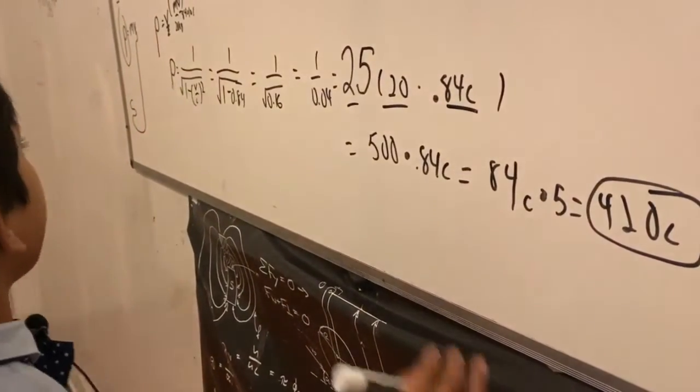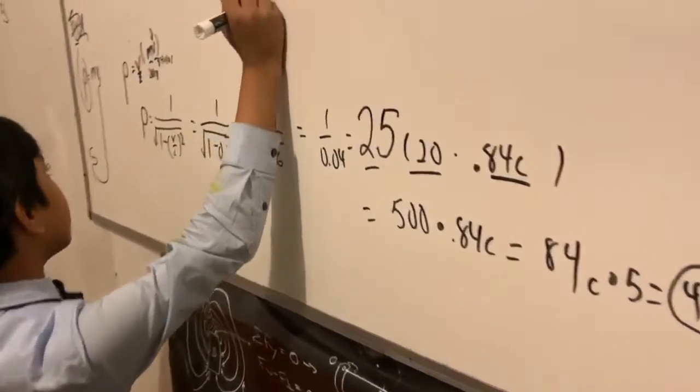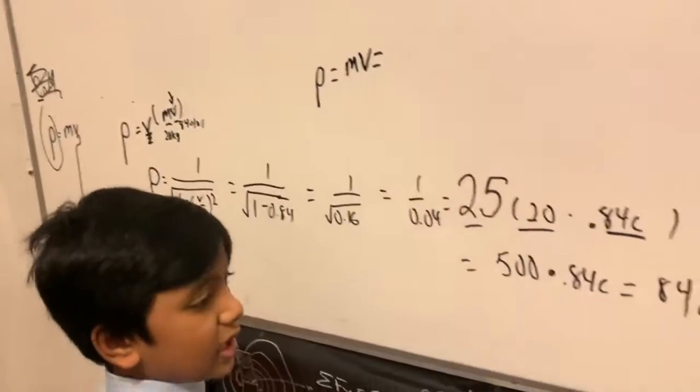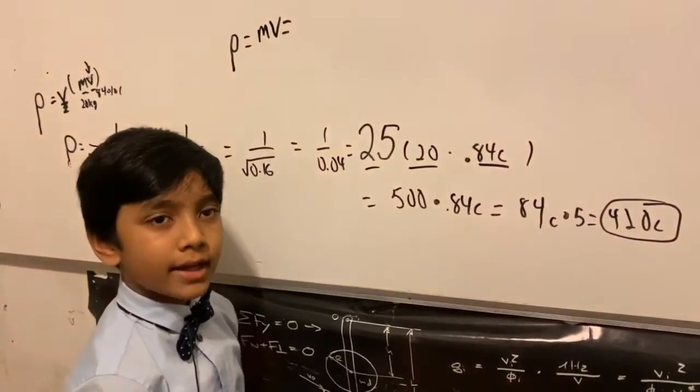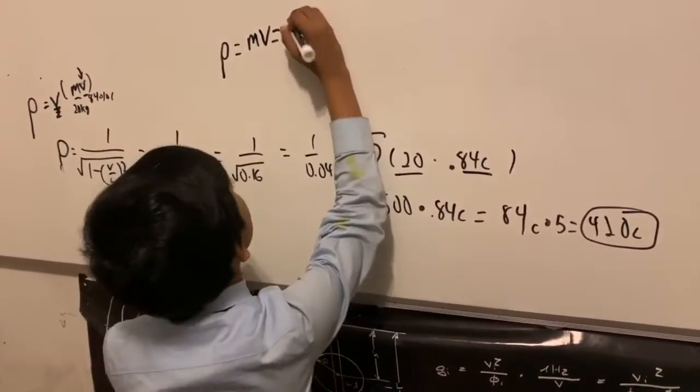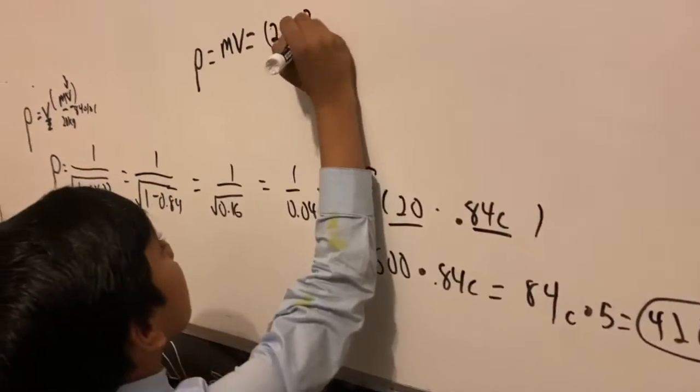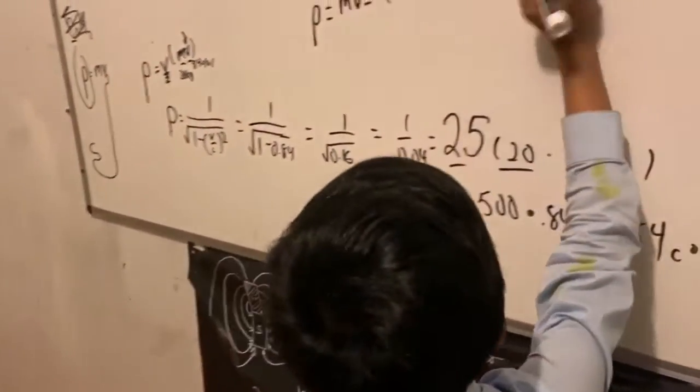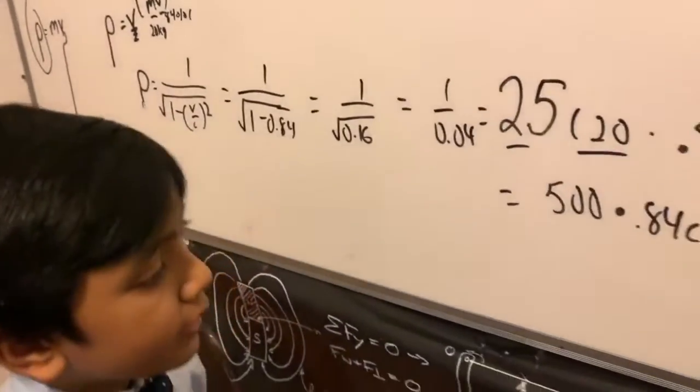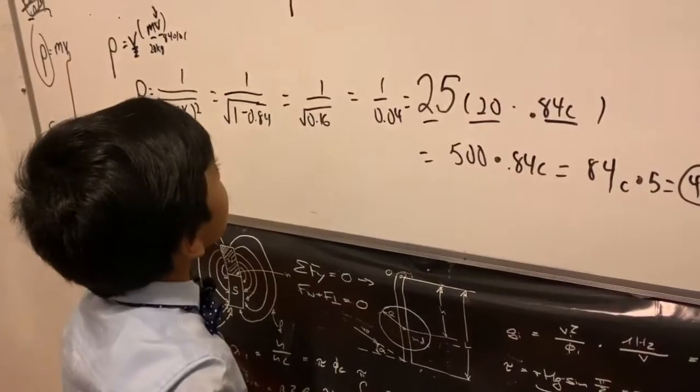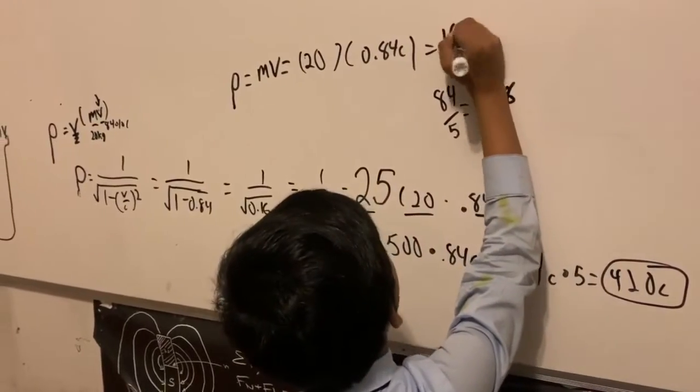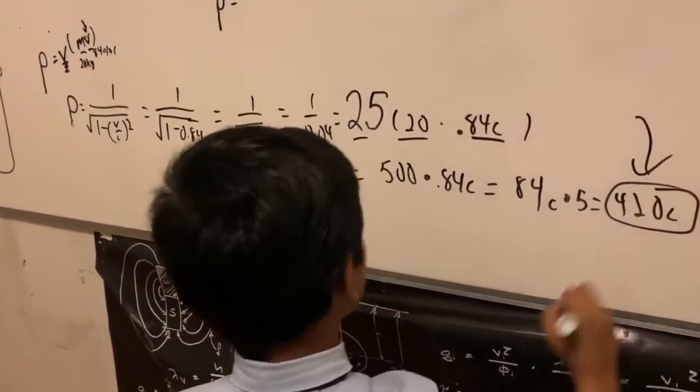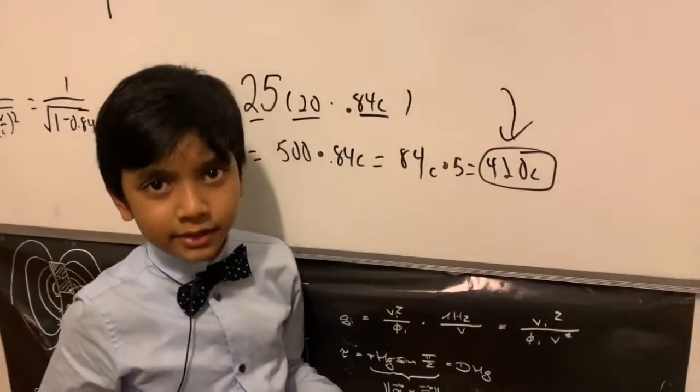But what happens if we use the original equation on this kind of velocity? Well it obviously wouldn't work out. We would get different results that aren't representative of the actual answer. See this? Look at this. 20 times 0.84c. That's way smaller than our original answer and not how it's supposed to be when you're going at such large speeds. So that only gives you 16.8c, which is significantly smaller than this beauty that we have conceived right here.